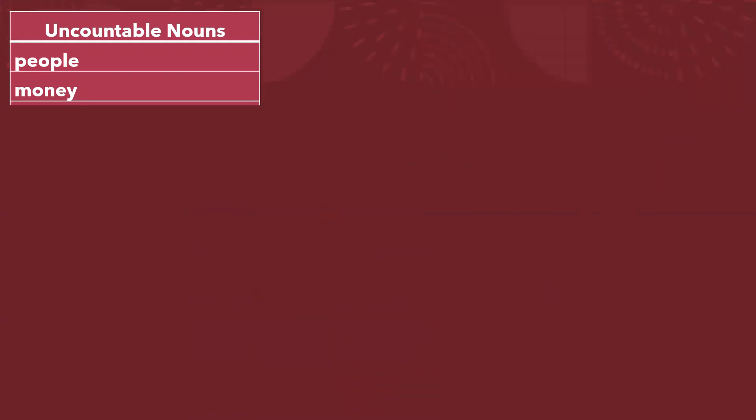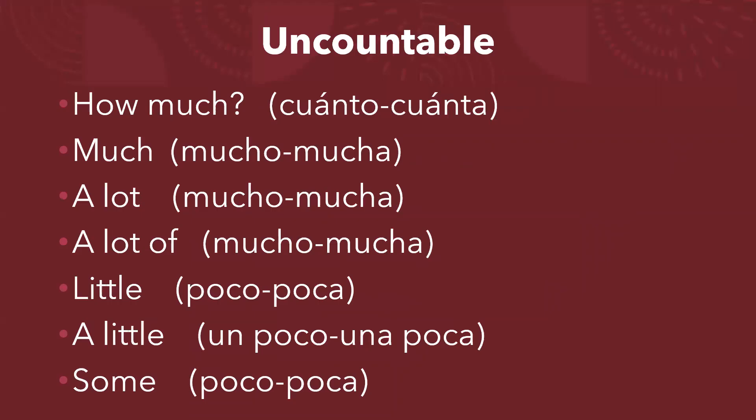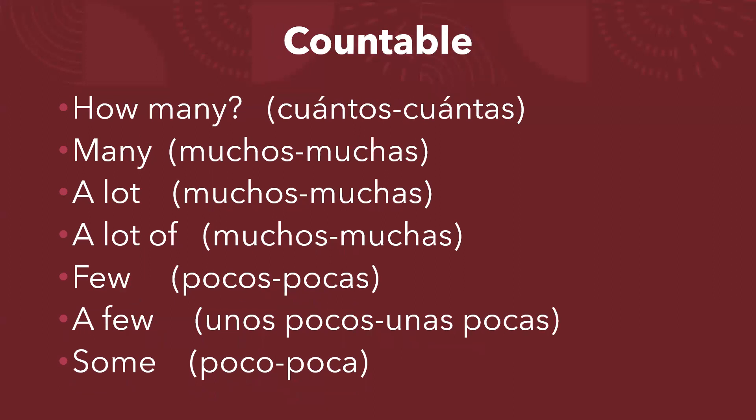Lo importante aquí acerca de los quantifiers es entender que para uncountable, cuando hablamos de gran cantidad usamos much, pero cuando hablamos de una pequeña cantidad hablamos de a little. Podemos hacer la pregunta 'how much' para decir cuánto o cuánta — cuánta población, cuánta gente, cuánta agua, cuánto frío hace. Las respuestas: para una gran cantidad, much; para una cantidad pequeña, little o a little.